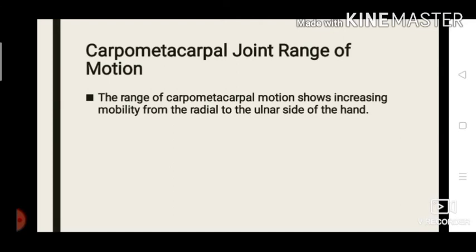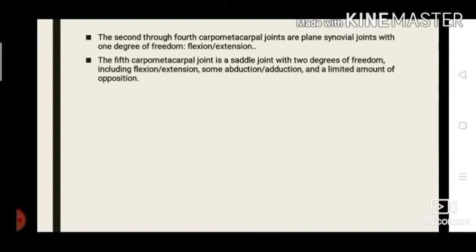Next we move to carpometacarpal joint range of motion. The range of carpometacarpal motion shows increasing mobility from the radial to the ulnar side of the hand — that is, towards the little finger. The second through fourth carpometacarpal joints are plane synovial joints with one degree of freedom, that is flexion and extension. The fifth carpometacarpal joint is a saddle joint with two degrees of freedom, including flexion, extension, abduction, adduction, and a limited amount of opposition.